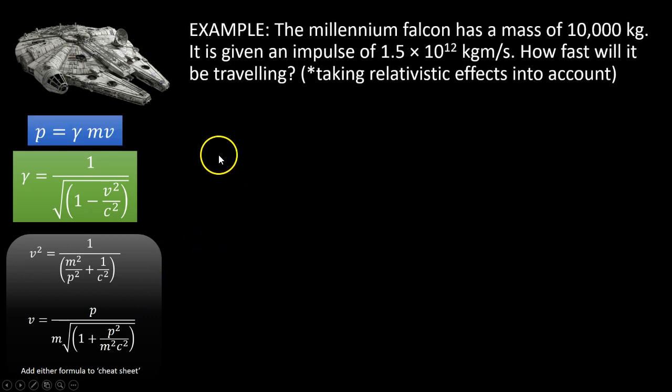Let's do a quick example. So let's go back to the Millennium Falcon. We've got a mass of 10,000 kilograms. We give it an impulse of 1.5 times 10 to the 12 kilogram meters per second. How fast will it be traveling? So we're going to take into account relativistic effects. I'm going to use this version of the formula to work it out. So we know the impulse change. We know p, the speed of light, and we know the mass of the ship.